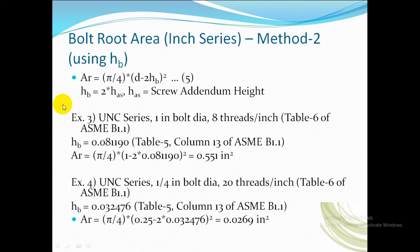Let us derive the bolt root area for method 2, which is nothing but using HP. Ar equals pi by 4 times (d minus 2 times HP) whole square. HP, which is nothing but 2 times screw addendum height, external addendum height. The area calculator based on this formula is shown in table 6 of ASME B1.1.